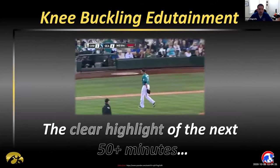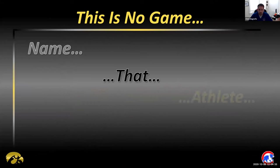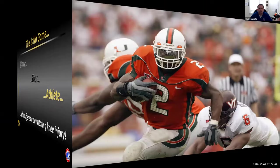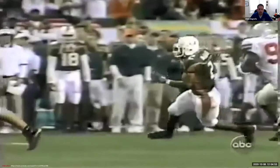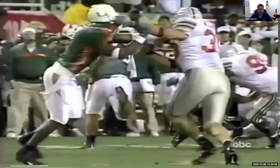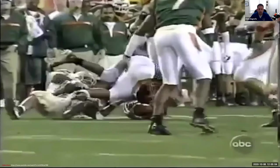Anytime I can poke fun at the White Sox, I try to do so. We'll start with a devastating knee. This is Willis McGahee, famous running back from the University of Miami, and here's how he suffered his devastating knee injury — I believe it was in the Fiesta Bowl. Probably doesn't take the completion of fellowship to realize that he had a problem.